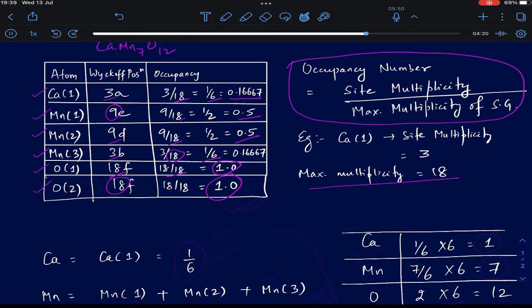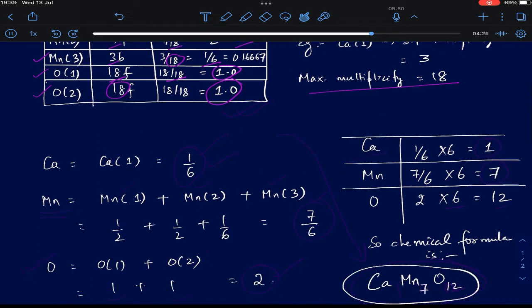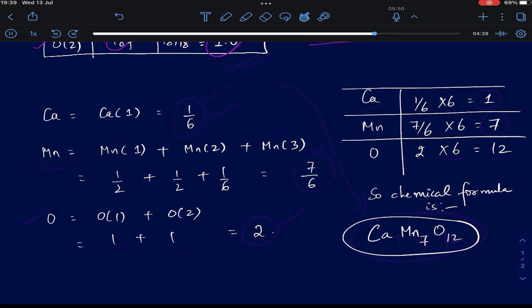Now that you have refined your structure, you would like to get back the chemical formula. That is also very straightforward. The calcium occupancy was 1/6, and if you want to get the chemical occupancy for Mn, first you have to add all the contributions from all the Mn atoms. So total Mn contribution is Mn1 plus Mn2 plus Mn3, which is 1/2 plus 1/2 plus 1/6, that gives a number 7/6. The total oxygen content is O1 plus O2, which is 1 plus 1, that gives you a value of 2.